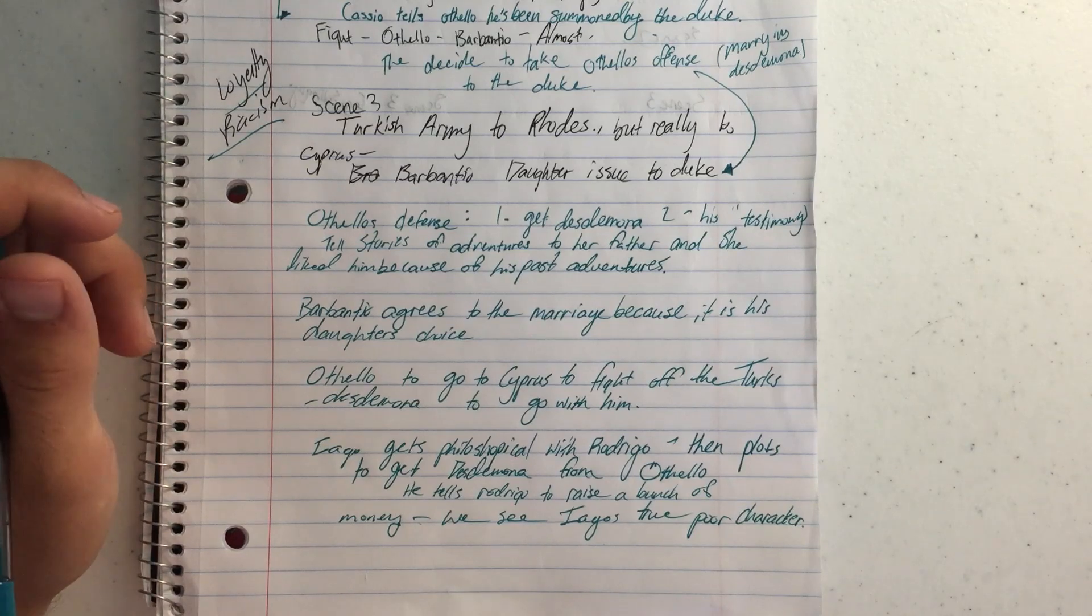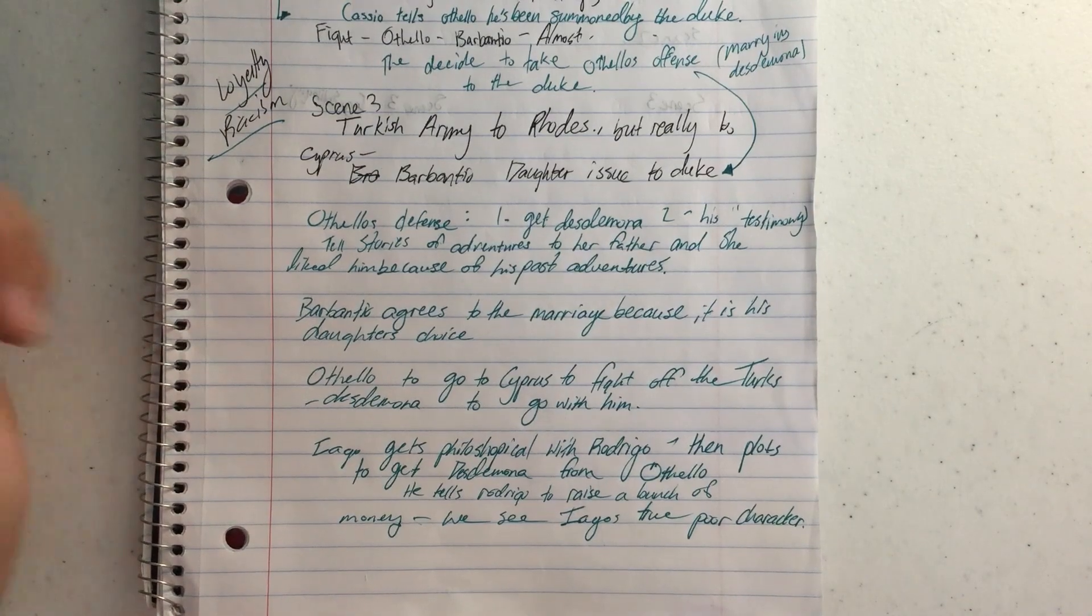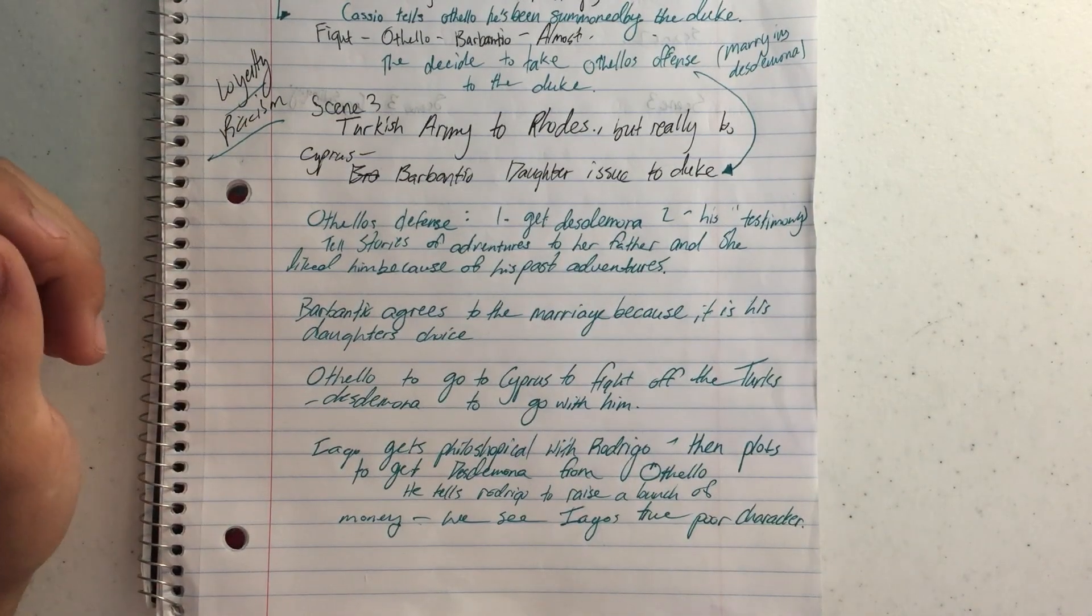She's like, sorry, Dad, I like Othello. And so Brabantio, the dad, is like, okay, I guess this marriage is going to go down. I'm okay with it.